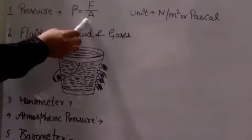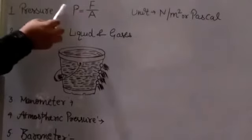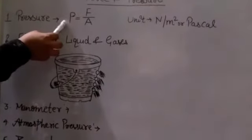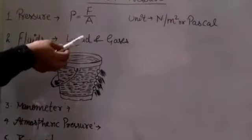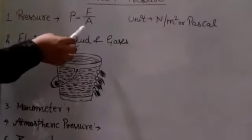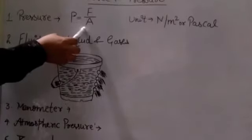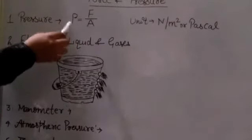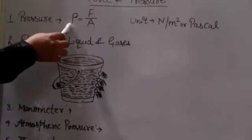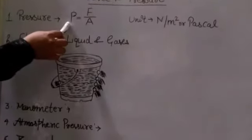The lesser the area of cross section, the more is the pressure, and vice versa. The more the area of contact of a given body, the lesser pressure it will exert.